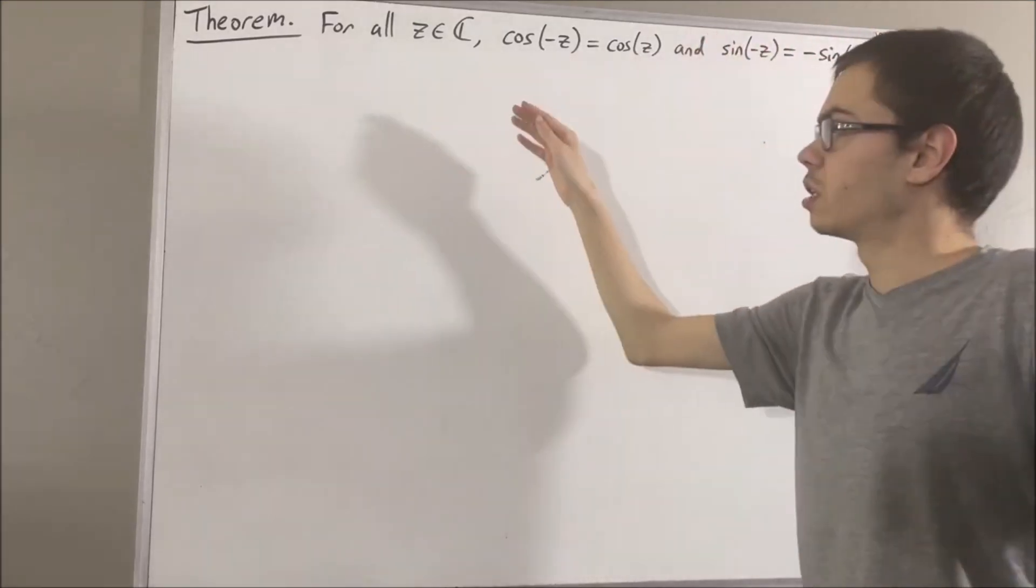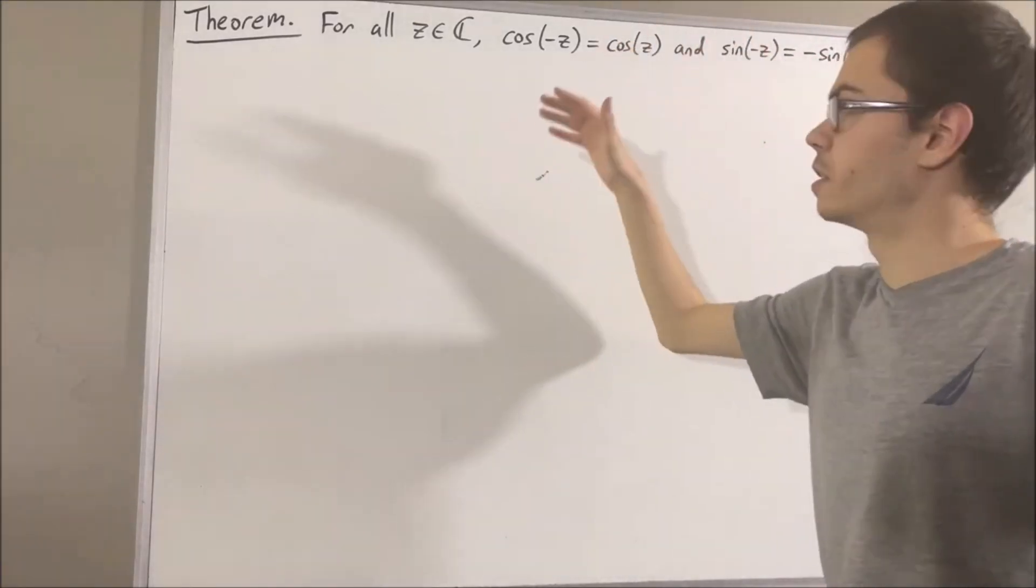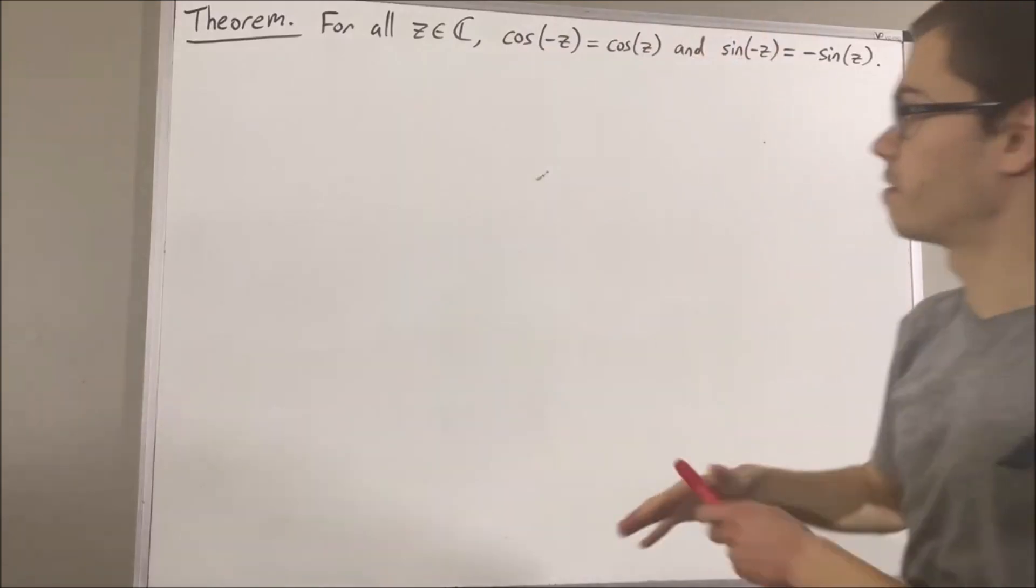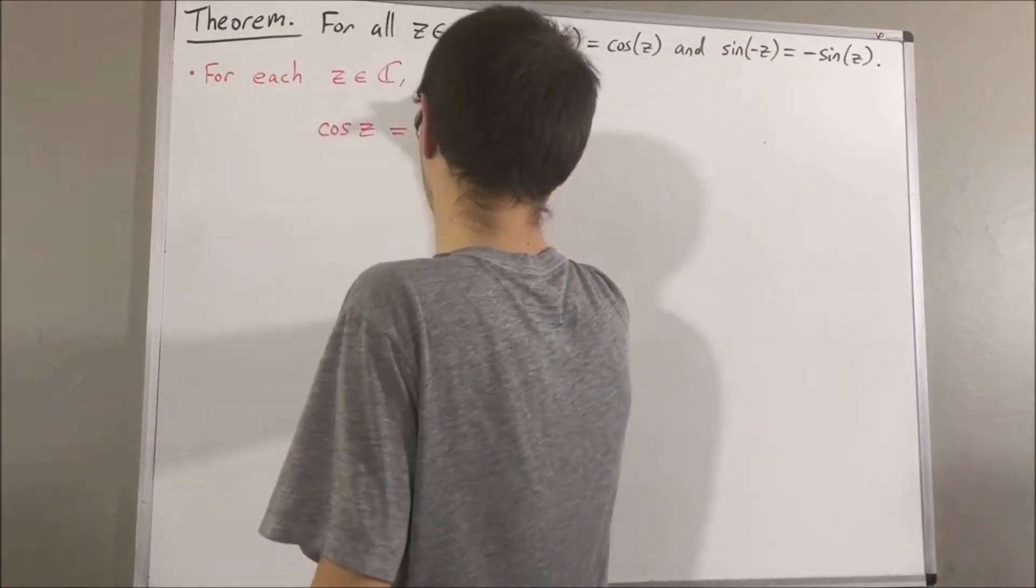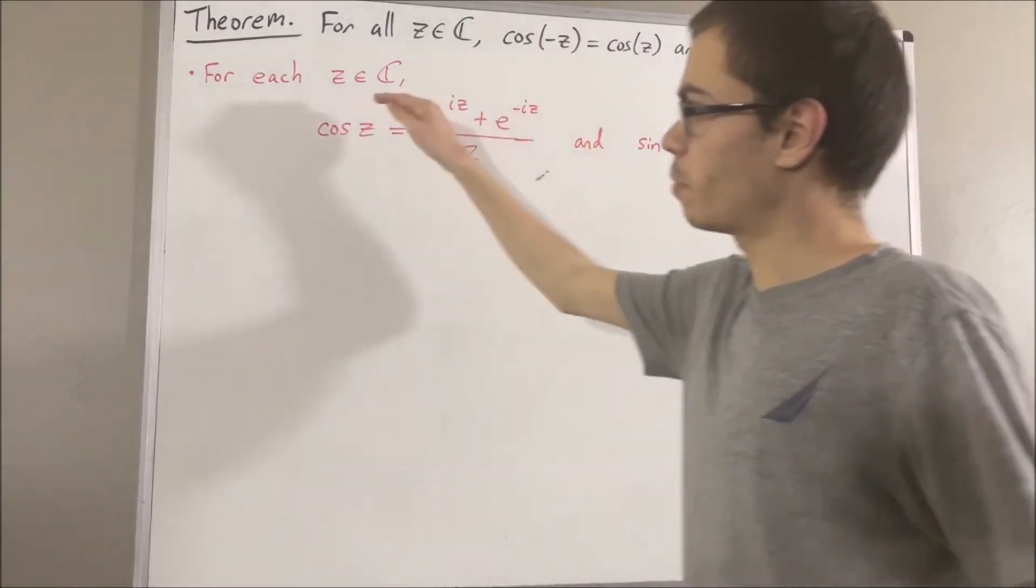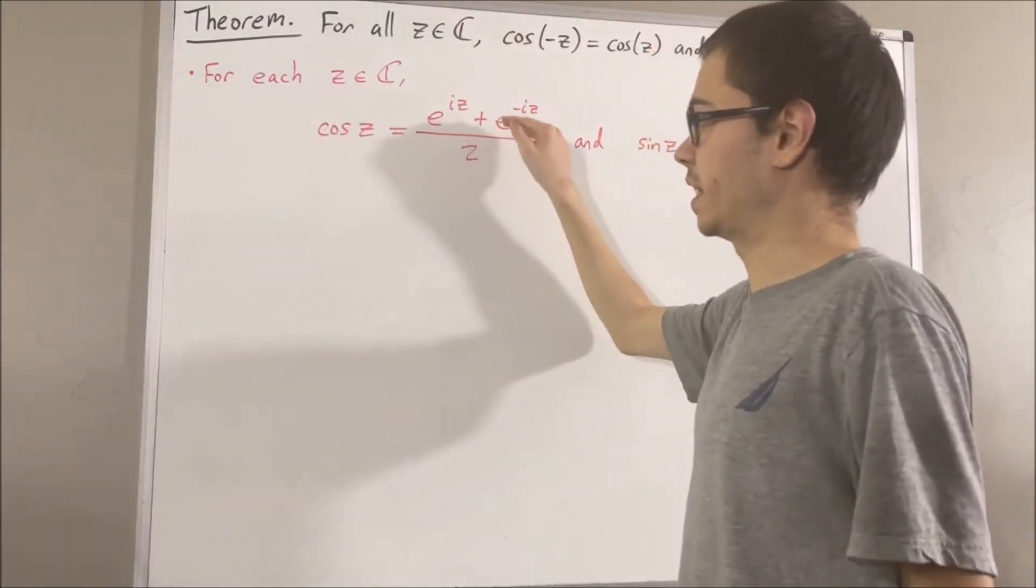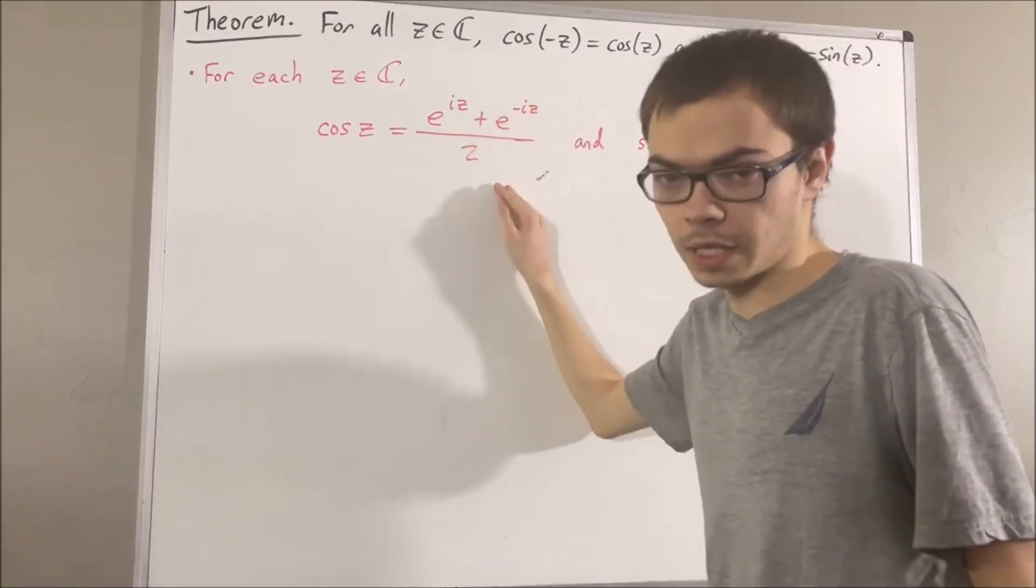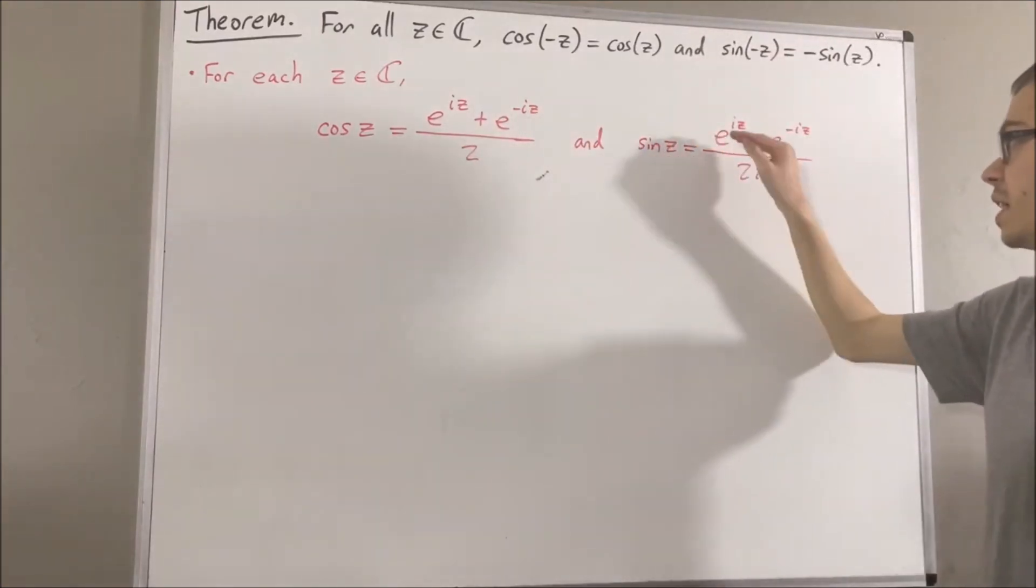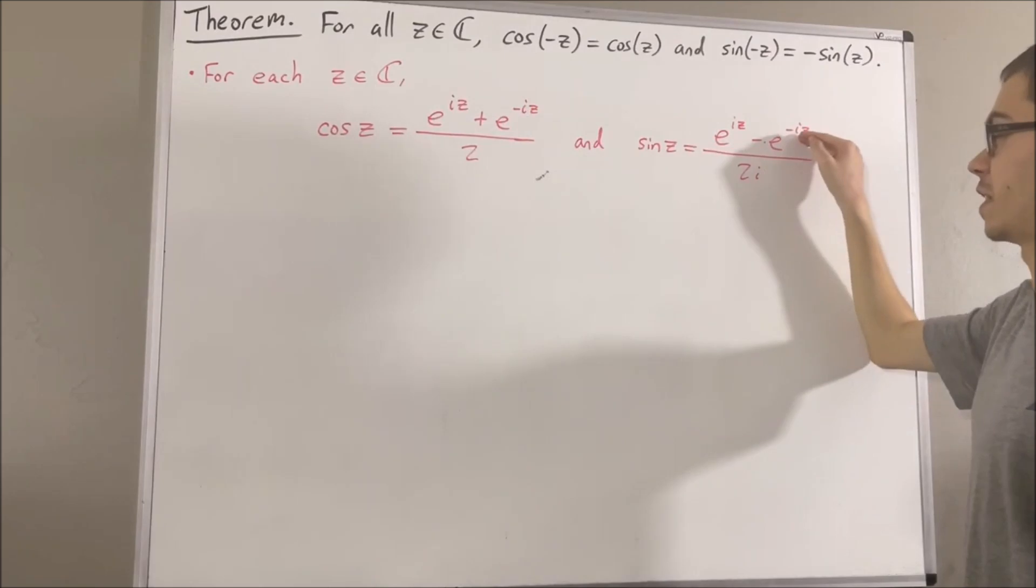Now to start, let's remind ourselves of our definition of cosine and sine. For each complex number z, we define the cosine of z to be e to the iz plus e to the negative iz over 2, and sine of z is e to the iz minus e to the negative iz over 2i.